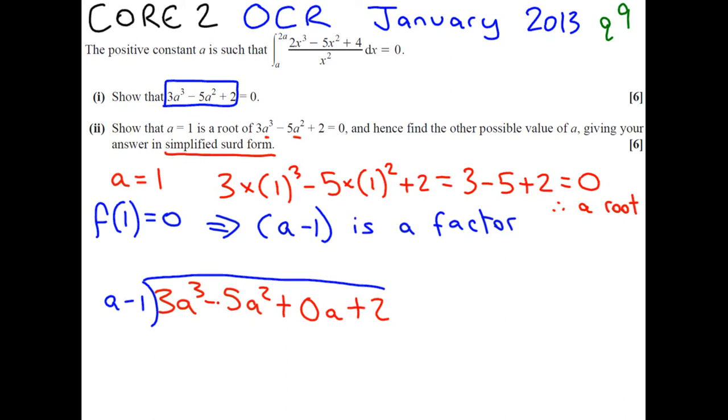So, how many times does A, our leading term, go into 3A cubed? It's 3A squared. So, we put 3A squared in our answer line, and then we have to do 3A squared times by this to get 3A cubed minus 3A squared. Now, we subtract, so we get 0 here, they cancel, and we get minus 2A squared. We bring down our 0A, and we look at the next leading terms.